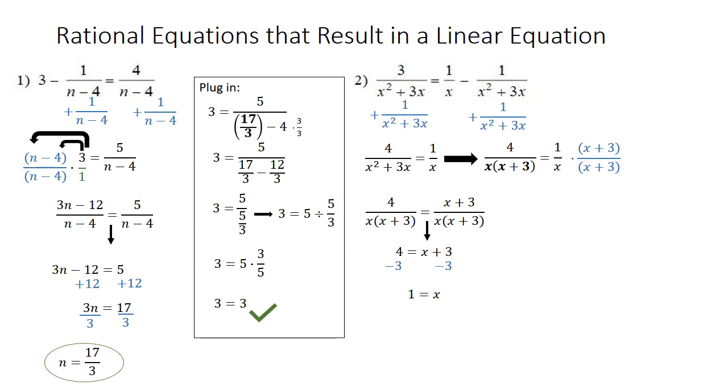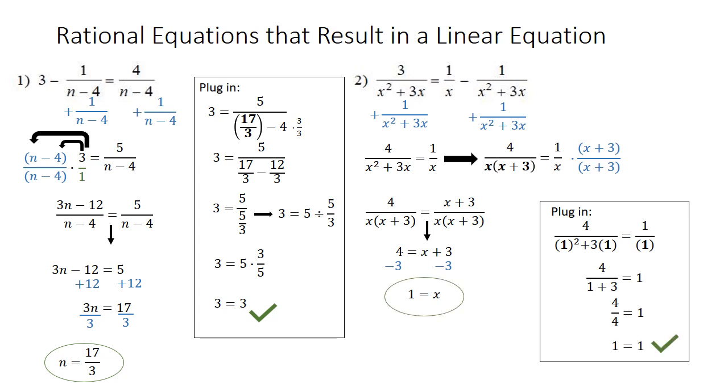We still have to plug it in to make sure it works. So I'm going to use the second equation again, which was 4 over x squared plus 3x equals 1 over x. So I plug 1 in for x. 1 squared is 1. 3 times 1 is 3. And then on the right-hand side, 1 over 1 is just 1. 1 plus 3 is 4. And 4 over 4 is 1. So that means this answer does work.